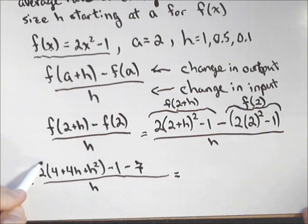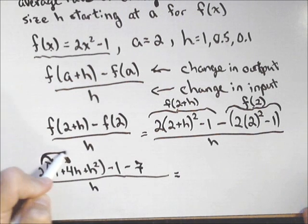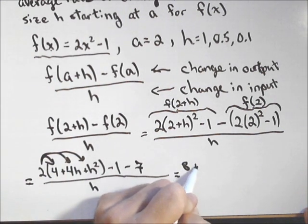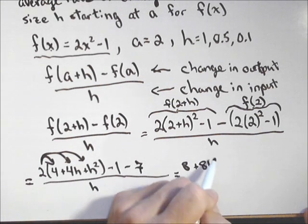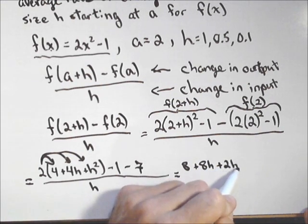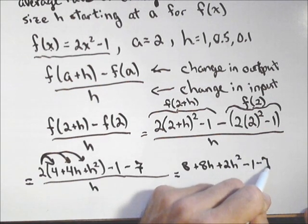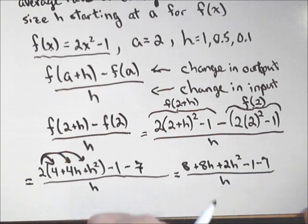Now, I'm going to distribute this 2 and combine like terms. So, I'll have 8 plus 8h plus 2h squared minus 1 minus 7 all over h.